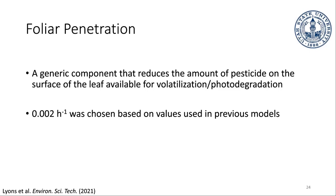For the penetration rate — how the chemical actually makes its way inside the leaf — I'm just going to skip over the details since there was no data on this. I just made up a generic rate that seemed reasonable based on what some other people had hypothesized. The volatilization is dependent on the plant, the chemical, and the temperature — the hotter it is, the faster it evaporates. The photodegradation is dependent on the chemical and the sunlight. The penetration is just a generic piece and is the same for everything in this model.